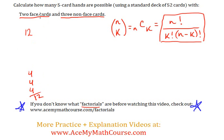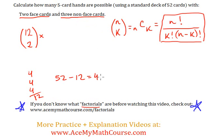So, if we want to have two face cards, we're going to go for 12 combination 2. But we also need to select three non-face cards. How many non-face cards are there in the standard deck? Well, 52 cards in total, 12 face cards, so there are 40 non-face cards. And from those, we're selecting three of them — so 40 combination 3.